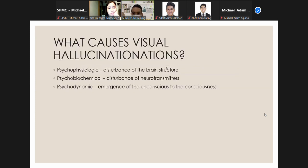Numerous hypotheses have been suggested to explain the genesis of visual hallucinations. These have been summarized and categorized by Asad and Shapiro as due to psychophysiologic causes involving disturbance of brain structures, psychobiochemical causes involving disturbance of neurotransmitters, and psychodynamic causes involving emergence of the unconscious to consciousness. Visual hallucinations can result from all three processes given the interplay among disturbance of brain anatomy, brain chemistry, prior experiences, and psychological mechanisms. However, the similarity of visual hallucinations associated with seemingly diverse conditions suggests a final common pathway.